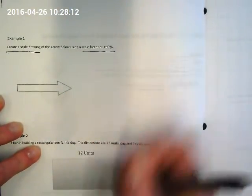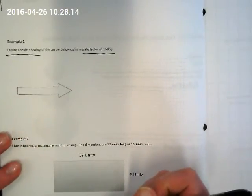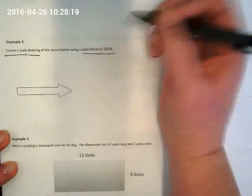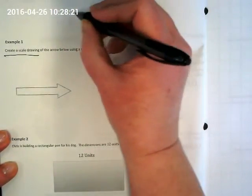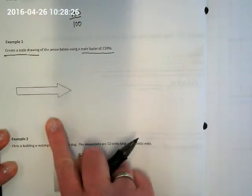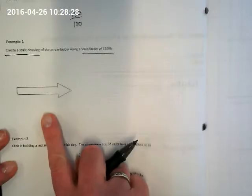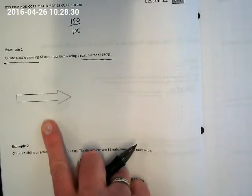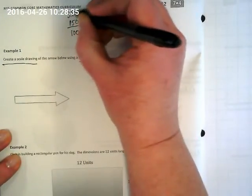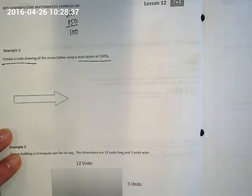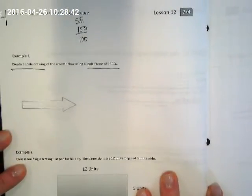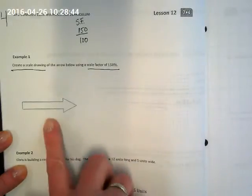Because now we're going to start using proportions to find new measurements that we can expand. This says create a scale drawing. That means we're actually going to be drawing something. And we're going to use a scale factor of 150%. How do I write 150% as a fraction? 150 over 100. Which means, is this going to be an enlargement or a reduction? We're going 50% more than the size that's here already. This is our scale factor. Can I reduce it? Yeah. Do I have to reduce it if I'm going to be doing cross multiplication? No.